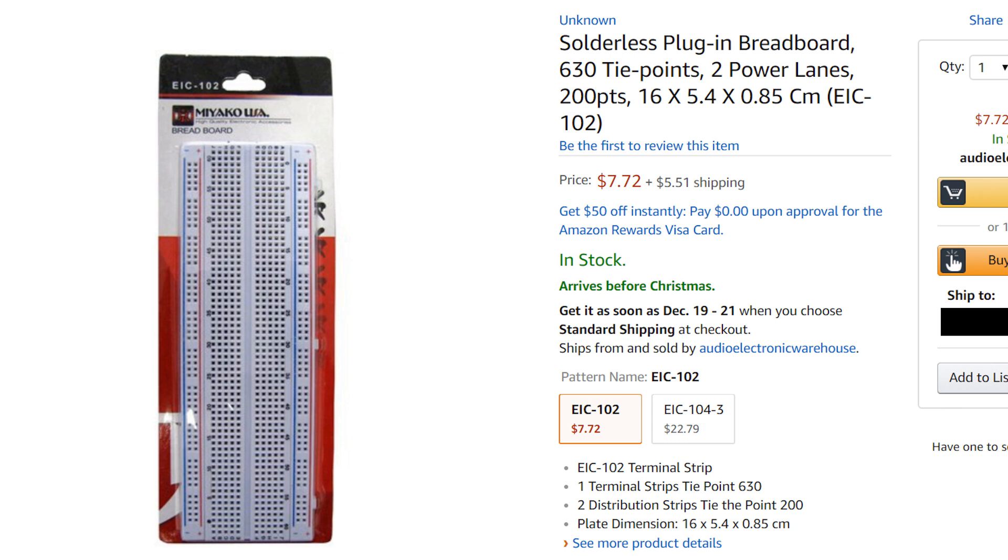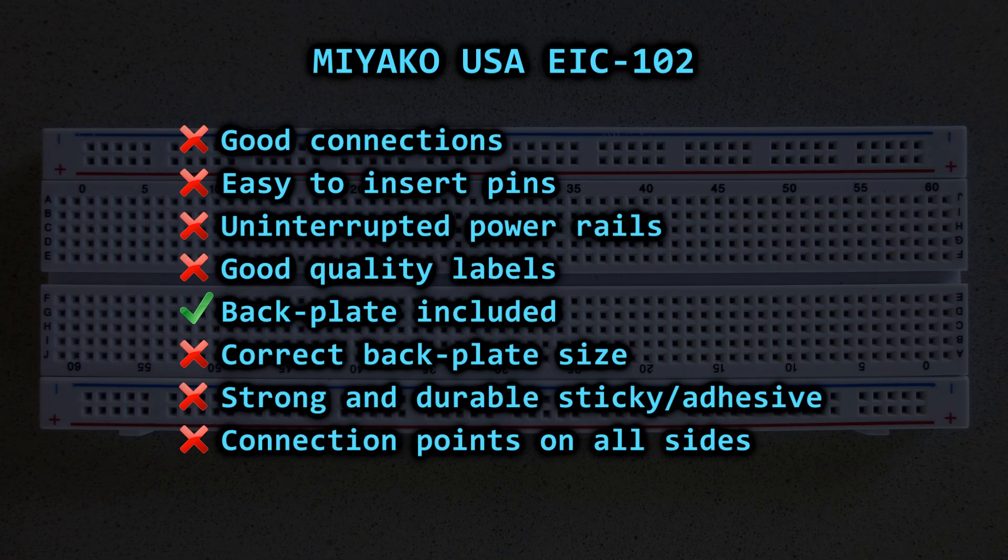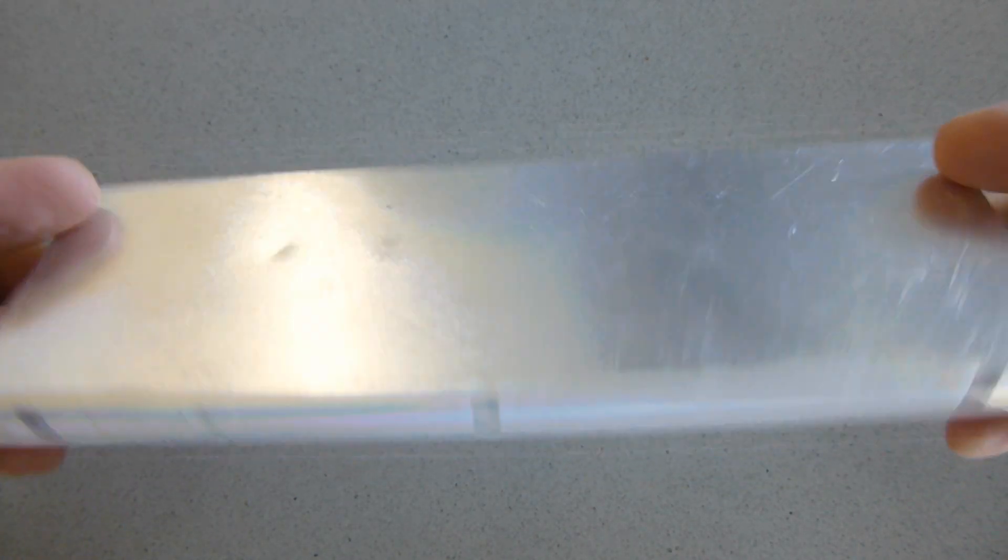In fourth we have the Miyako USA that is very common in some countries, but even though it came with a backplate, the rest is basically the same story with bad connections, split power rails and nonsense labels. Skip this one even if it's on sale.